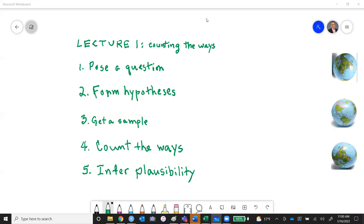We're going to do five things here, twice over. Thing number one is we're going to pose a question. We're then going to form hypotheses about the question. We're going to get a sample of data. We're actually going to generate data today. Then we're going to simply count the ways using a very simple counting principle. We use it in just about every game we play. Then we're going to infer the plausibility of one of the hypotheses against another. It's relative plausibility.